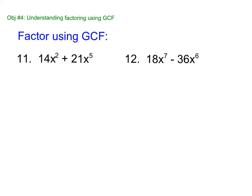All right, try these on your own. Pause the video. All right, so 14 and 21 is 7, right? 7, and then take our smaller X, X squared. So that's our GCF. We're going to divide. When we divide, we get 2 plus 3X to the third, parentheses, GCF on the outside. Done.